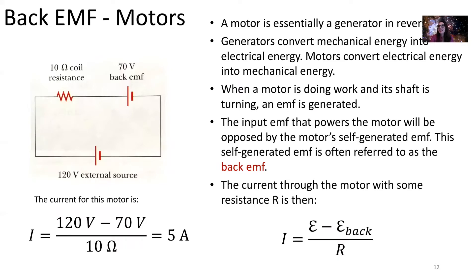Now, a motor is essentially a generator but in reverse. Generators convert mechanical energy into electrical energy, but motors do the opposite — they convert electrical energy into mechanical energy. When a motor is doing work, its shaft is turning and an EMF is being generated. You supply a motor with EMF and it produces rotational motion, still creating a torque.